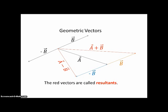So that's how we add and subtract vectors geometrically. The red vectors, by the way, are called resultants. They are the result of adding the vectors or following one vector and then the second vector.